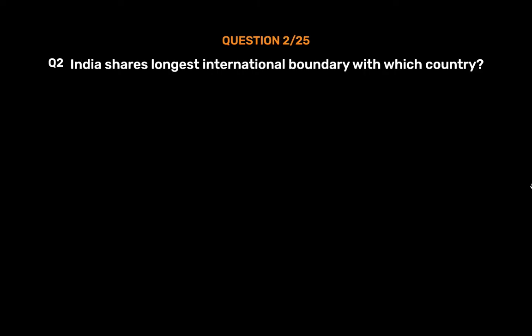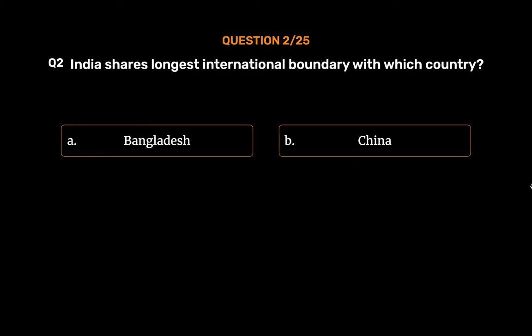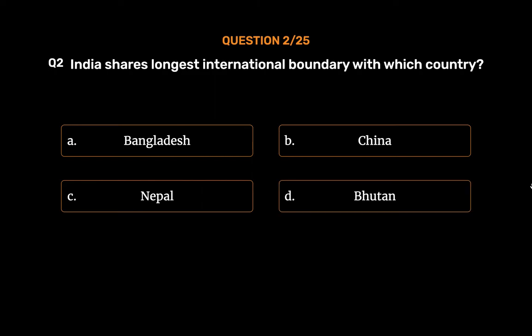Question No. 2. India shares the longest international boundary with which country? Option A: Bangladesh. Option B: China. Option C: Nepal. Option D: Bhutan. The correct answer is Option A: Bangladesh.